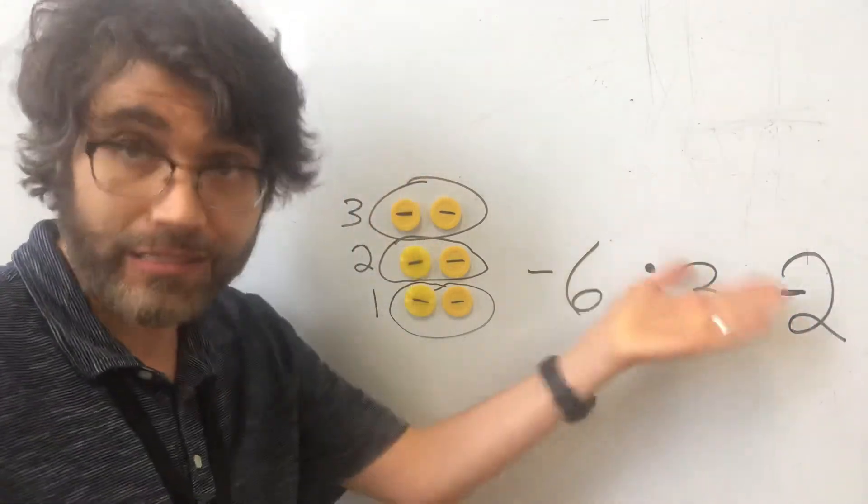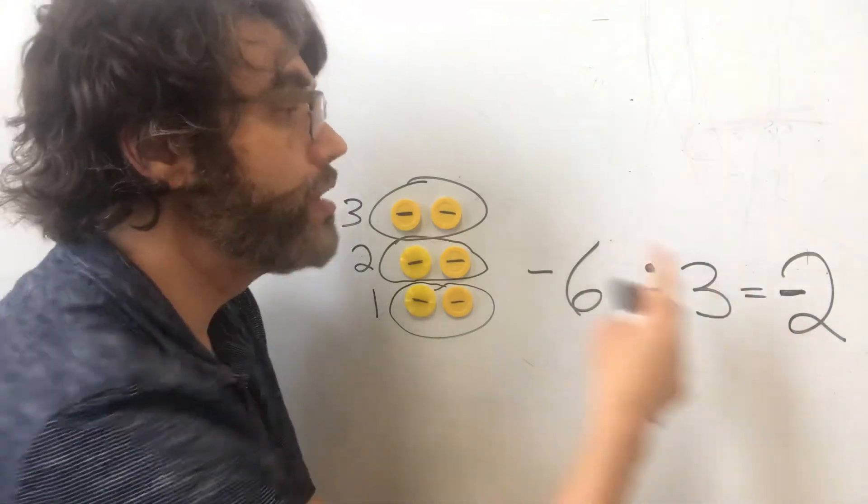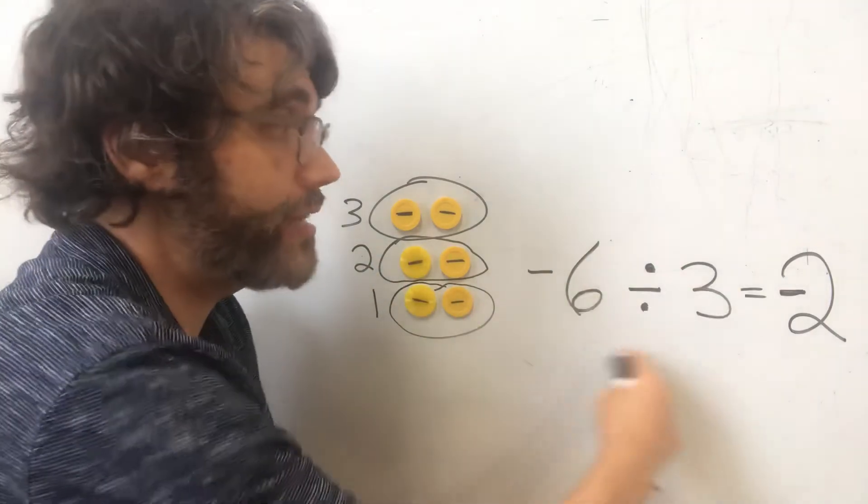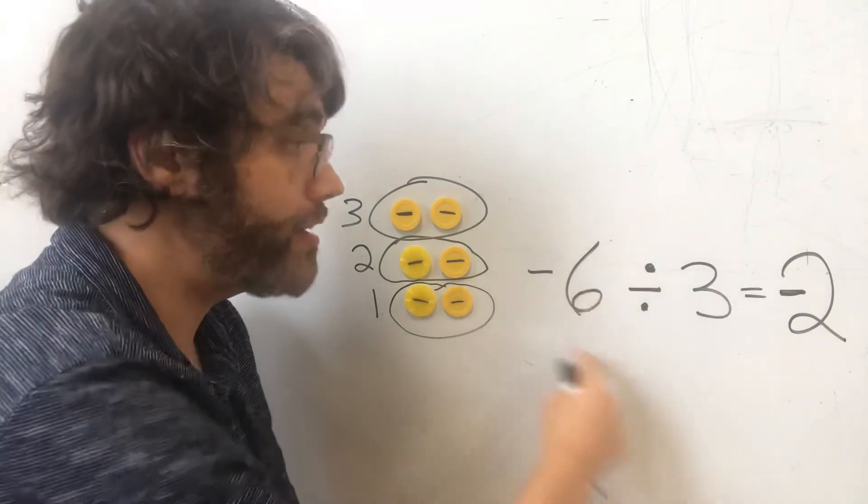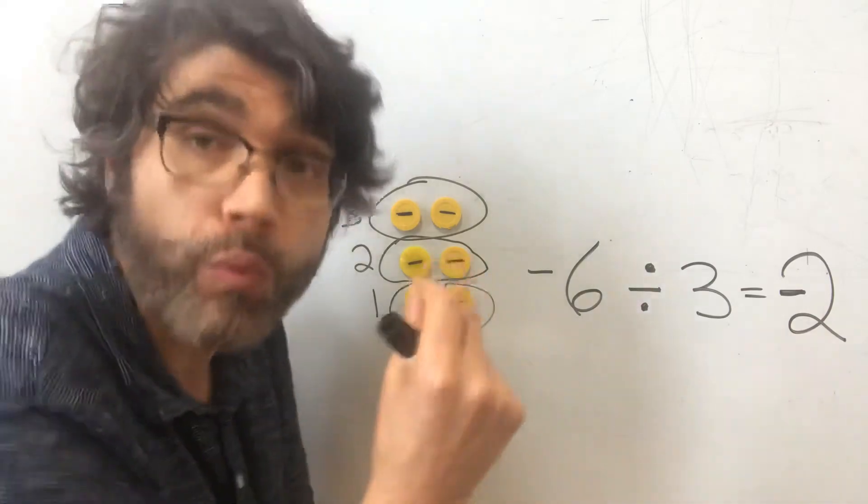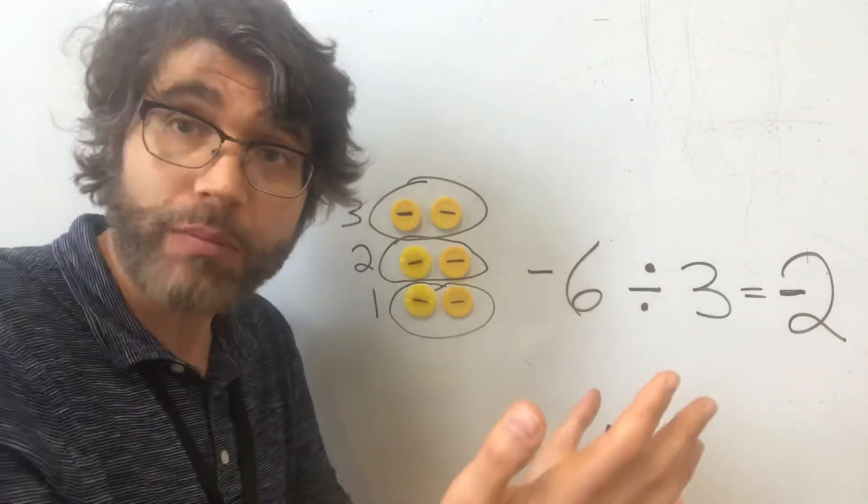Well, each group has $2, $2 of debt. All right? Debt is signified with a negative sign. So negative six divided by three is negative two. So just as when we were multiplying, and we only had one negative over here when we were multiplying, when we only have one negative over here when we're dividing, our quotient will be negative. The quotient is the name of the answer for a division problem.